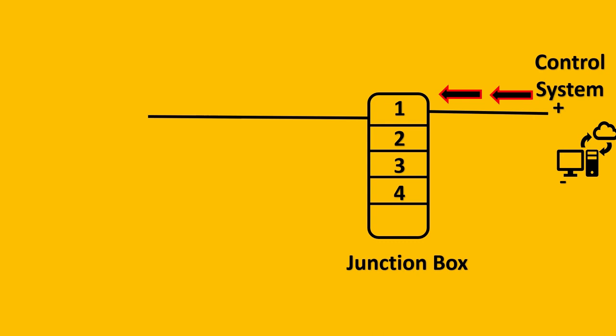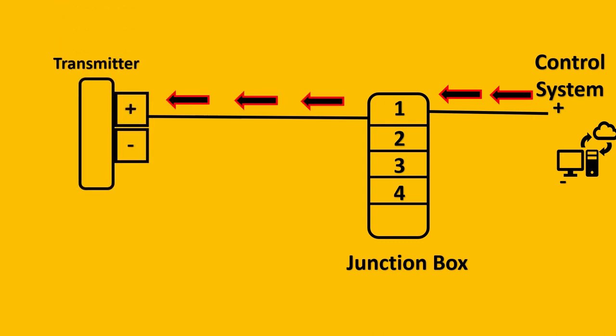For example, the positive signal from control system goes to your junction box as we had seen previously, and that goes to your transmitter. So the signal is very clear. From the transmitter now it will not go to loop power indicator. It will directly go to your junction box. So the cable, the negative, goes back to your junction box. In junction box we put a jumper here.